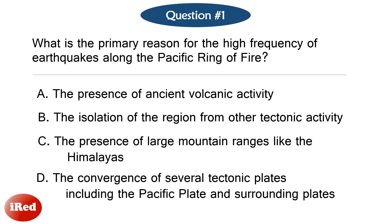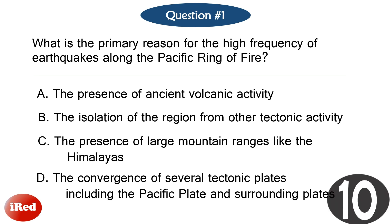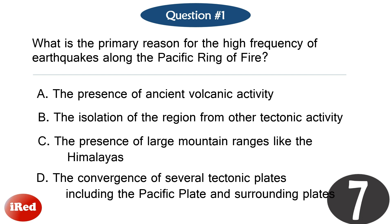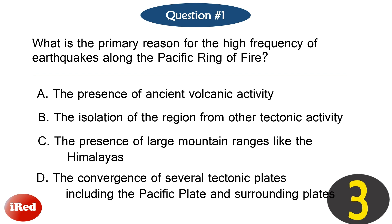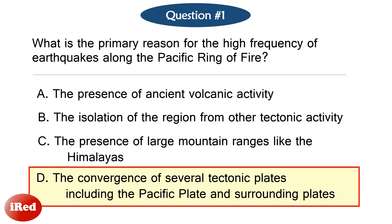Question number one. What is the primary reason for the high frequency of earthquakes along the Pacific Ring of Fire? The correct answer is letter D: the convergence of several tectonic plates, including the Pacific plate and surrounding plates.